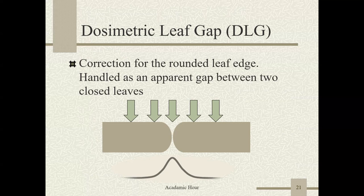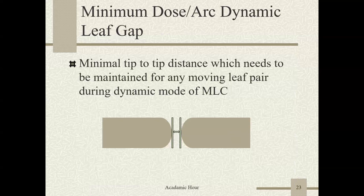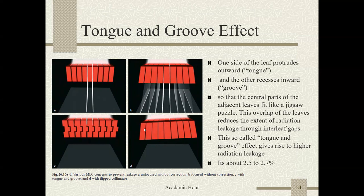The most important part of MLC dosimetry is the dosimetric leaf gap (DLG). The correction for the round leaf edge is handled as an apparent gap between two closed leaves. The radiation field crosses the MLCs on both sides, and in the middle there is a radiation hot spot from scatter — this is the dosimetric leaf gap. The DLG files are provided by Varian, and you run those files in the appropriate way following the guidelines to find out the DLG value.